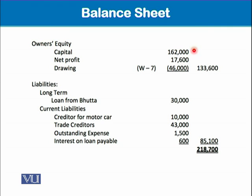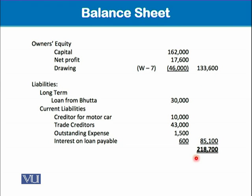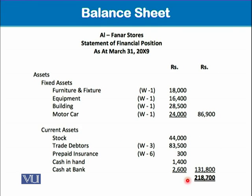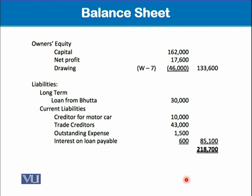Drawings of 46,000 are subtracted from capital, giving owner's equity of 133,600. The formula for owner's equity in a sole proprietorship is: opening capital plus net profit minus drawings. For liabilities: long-term liabilities include the loan from Bhuta. Current liabilities include creditors for the motor car purchased during the year, trade creditors from the trial balance, outstanding expenses of 1,500, and interest on loan payable of 600. Total liabilities give us 85,100, and total liabilities plus equity equals 218,700, balancing with the asset side.